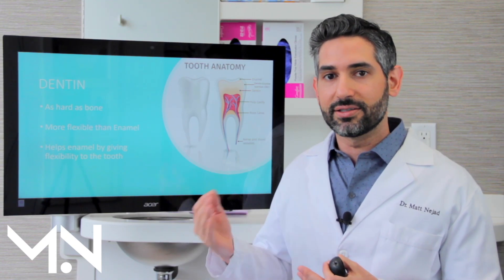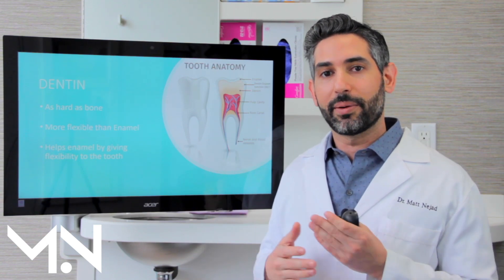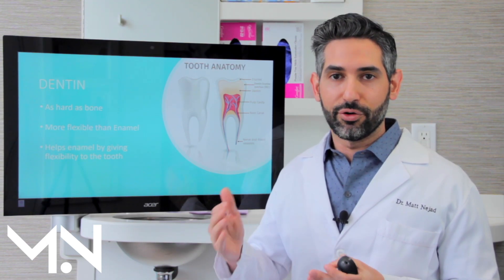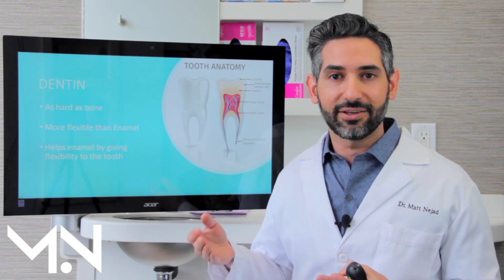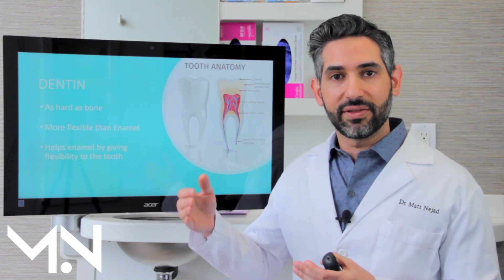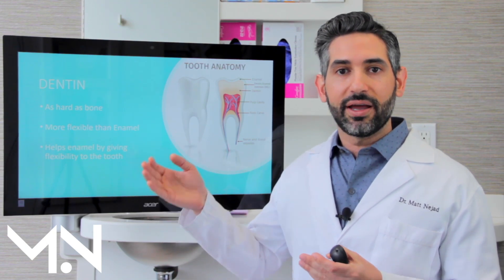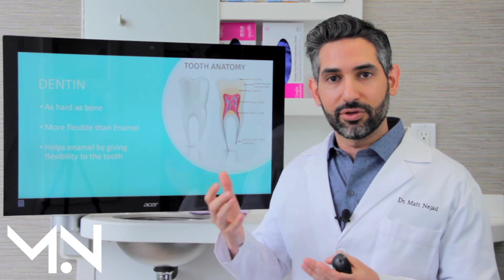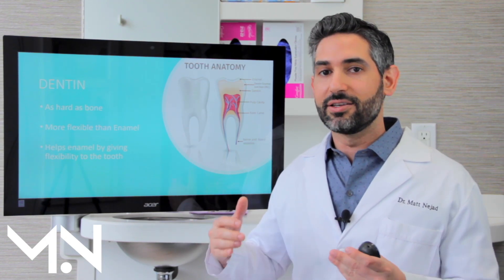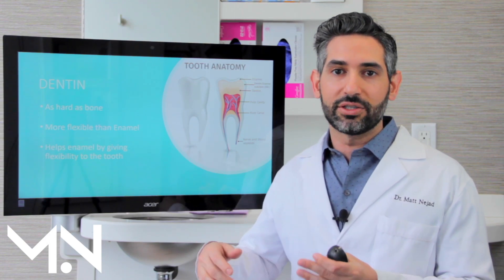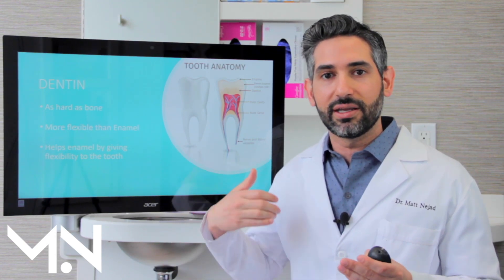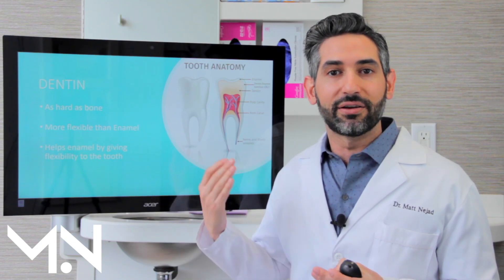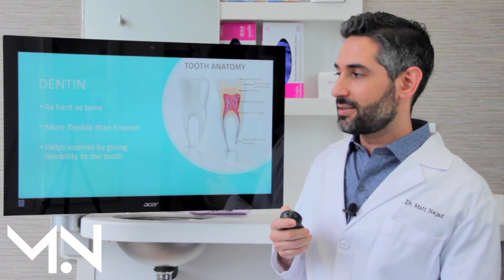Even though we get cavities and problems, it's hard to replicate in dentistry the function of a normal, natural, intact tooth. The combination of enamel and the more flexible dentin makes for a system that is a real good combination between strength, flexibility, and resistance to chipping and fracture.